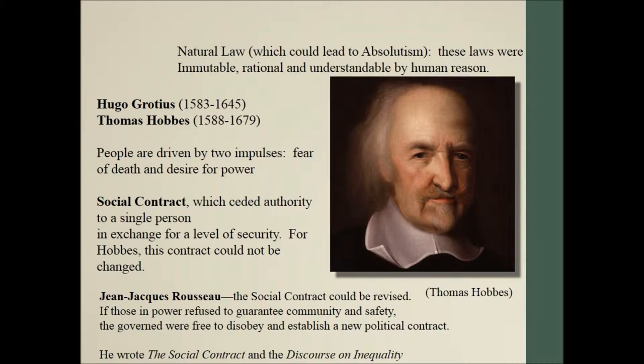Hobbes designed an idea called the social contract. His belief is that a group of people got together and gave away their power to one single person, and this person in return promised to protect these people. In effect, these two impulses are controlled: people have a fear of death, so if they're protected they should be okay, and the desire for power is given to one person. The social contract is that a group of people give one person power and that person promises to protect them.